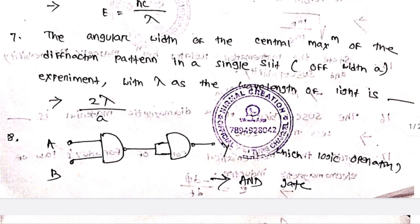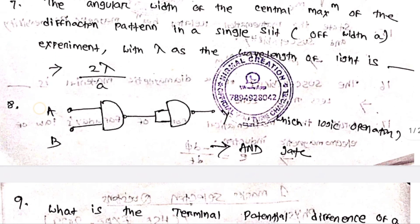The angular width of the central maximum of the diffraction pattern in a single slit experiment, where λ is the wavelength of light, is: 2λ/a. This question has been repeated, and 2λ/a is the correct answer.